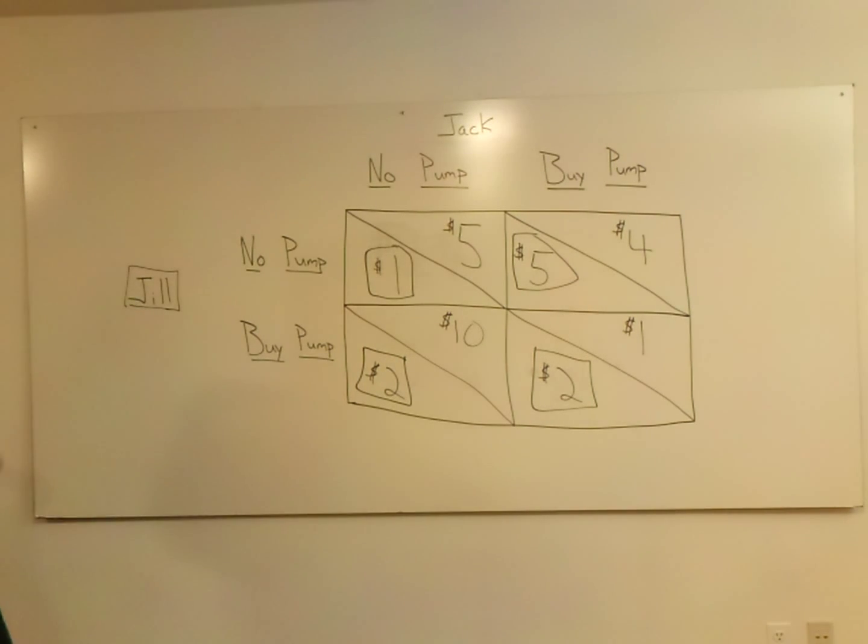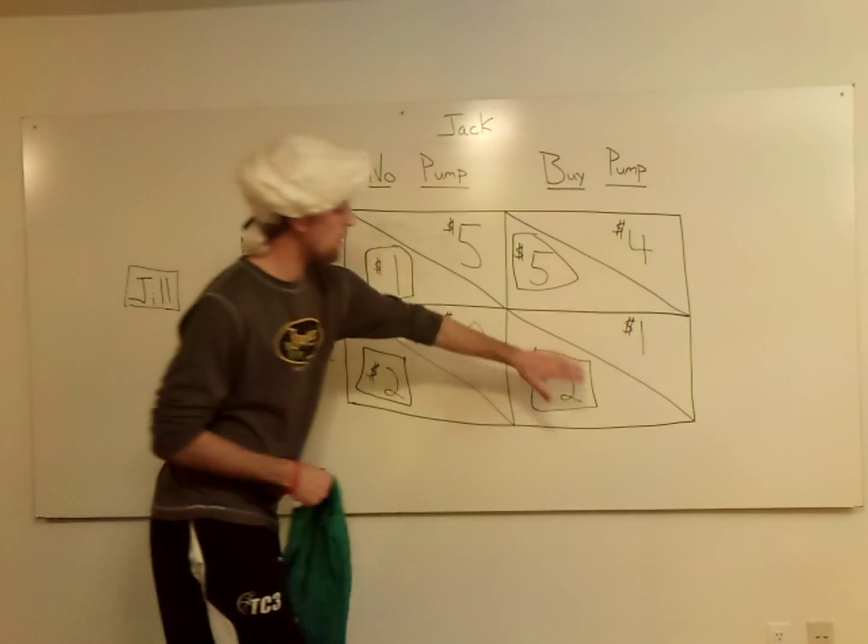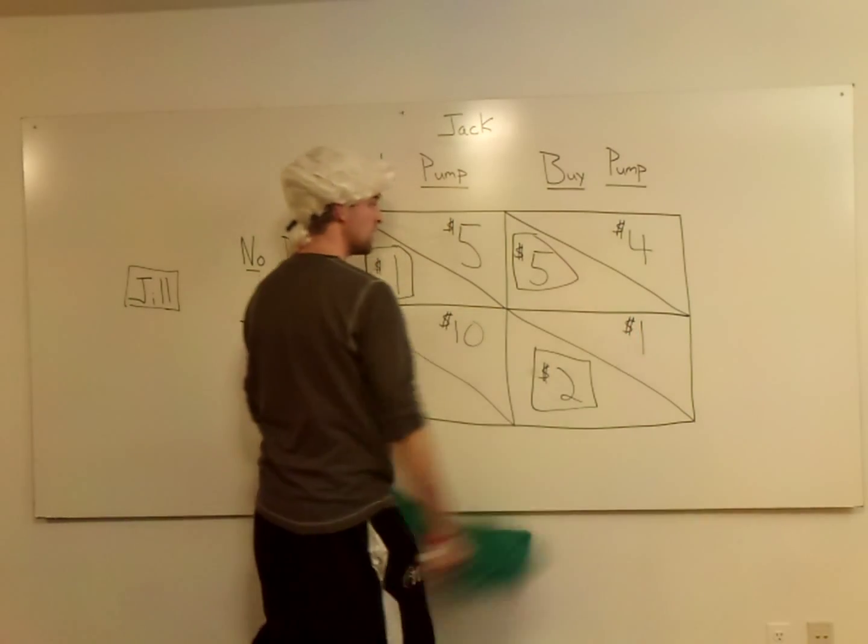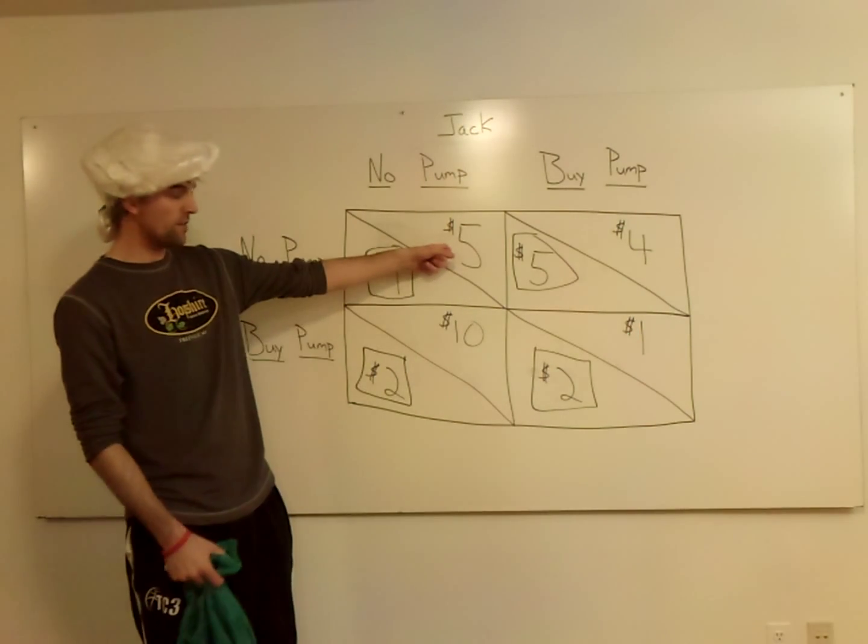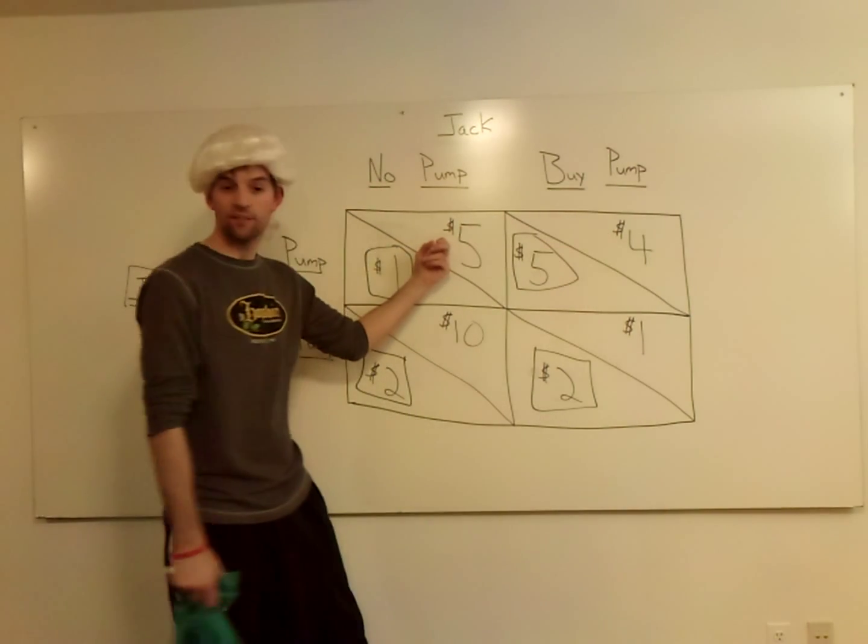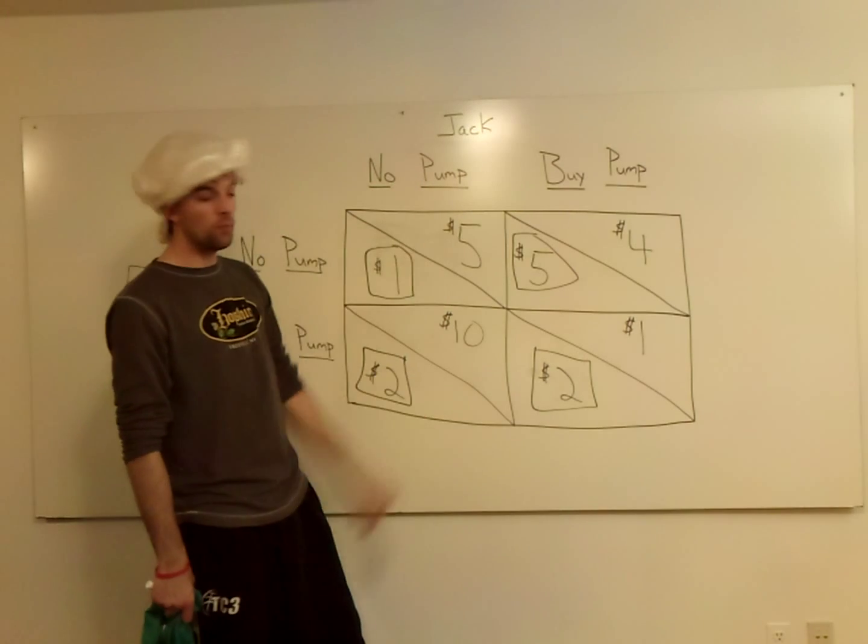So again, figure out where you need to look. She's going no pump, so you can ignore the bottom here. Take this right out of your view. Don't even think about it. So Jack's two options are $5 or $4. I'm going to take the $5 if I'm Jack and go with no pump.